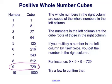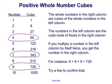9 times 9 times 9 equals 729. Similarly, 4 times 4 times 4 equals 64, 7 times 7 times 7 equals 343, and 1 times 1 times 1 equals 1. You can take any number in the left column, multiply it by itself three times, and get the number in the right column.